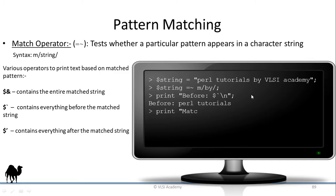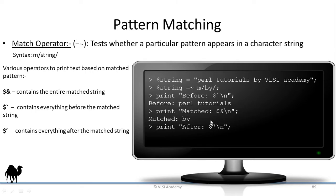If we print dollar ampersand ($&), it will give you the exact match, so the output will be 'by'. And if you print dollar apostrophe ($'), it will match everything after the matched string and print that. Since 'VLSI Academy' is after 'by', it will match with 'by' and print everything after that — so the output will be 'VLSI Academy'.